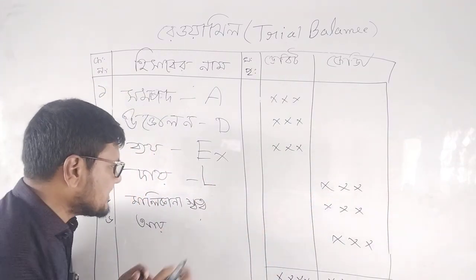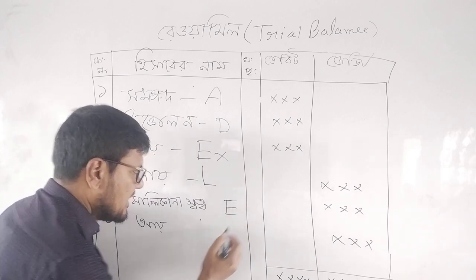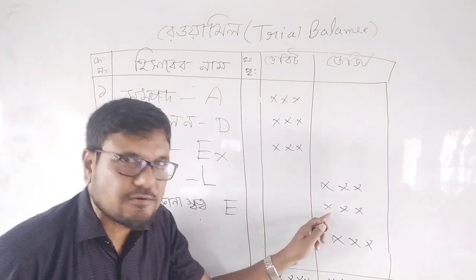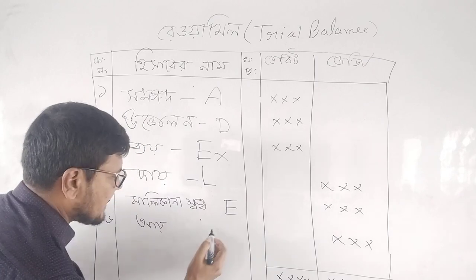The next is equity. Equity will also transfer to the credit side of trial balance. And lastly, revenue will be transferred to the credit side of trial balance.